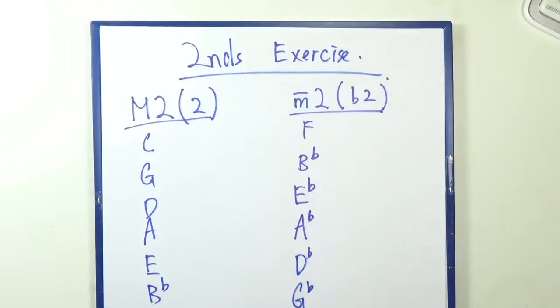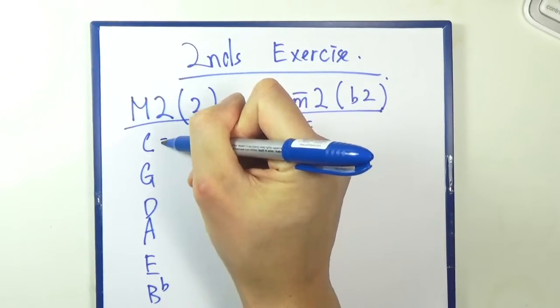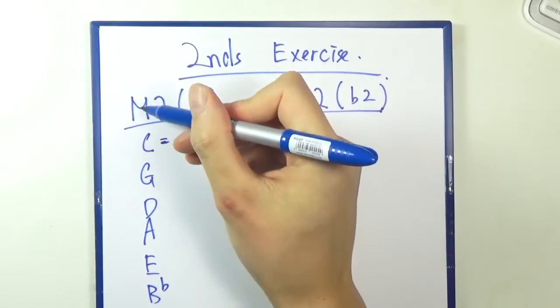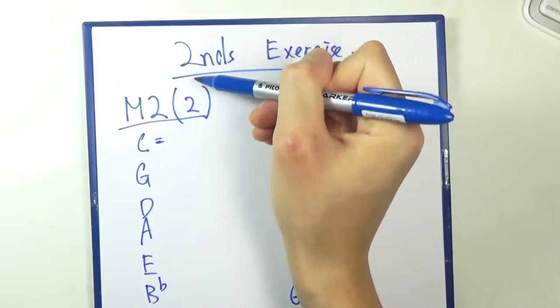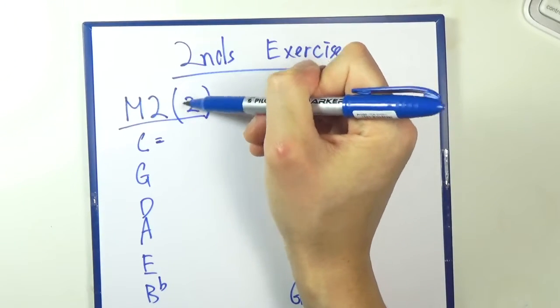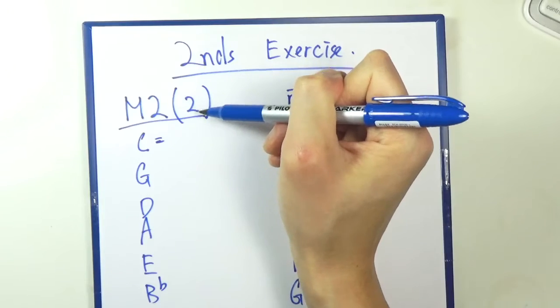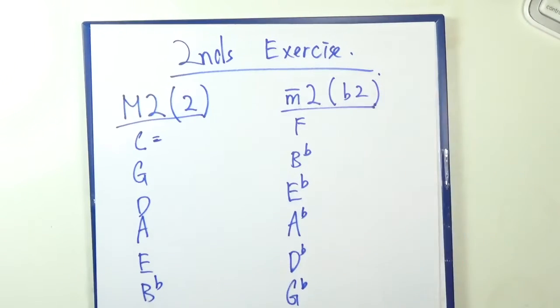So the way you do it, if you're trying to look for a major second, the shorthand or the number system notation, just write down number 2 here. And this one is flat 2 for minor second.